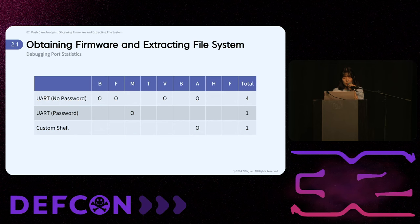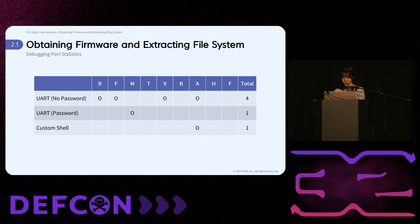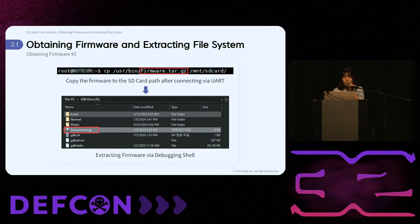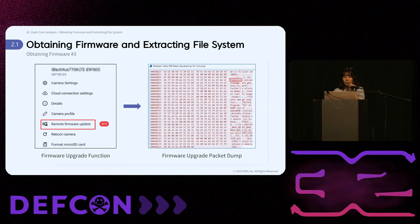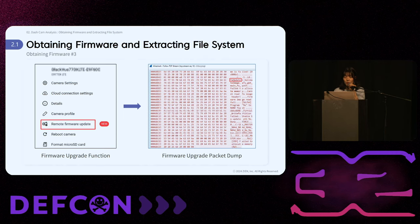Here are the statistics for UART shells found in the analyzed devices. Out of nine devices, five had UART shells, and four of these allowed shell access without a password — one of these four had a custom shell. Using the debugging shell, you can copy the firmware to an SD card, connect the SD card to a laptop, and extract the firmware. All the analyzed dashcams have firmware upgrade functionality. The third method involves analyzing this functionality to either obtain the firmware download URL or capture packets to get the latest firmware.